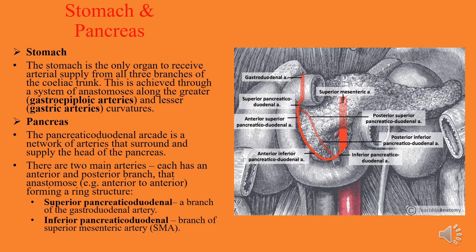The pancreaticoduodenal arcade is a network of arteries that surrounds and supplies the head of the pancreas. Each of the two main arteries has an anterior or posterior branch that anastomoses — for example, anterior to anterior — forming a ring structure. One branch is the superior pancreaticoduodenal, which comes from the gastroduodenal artery.